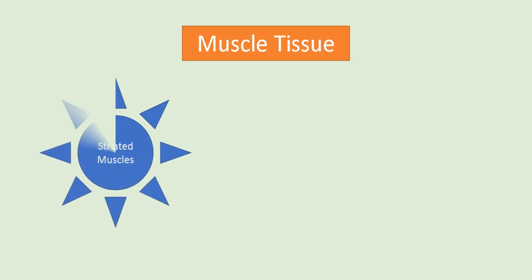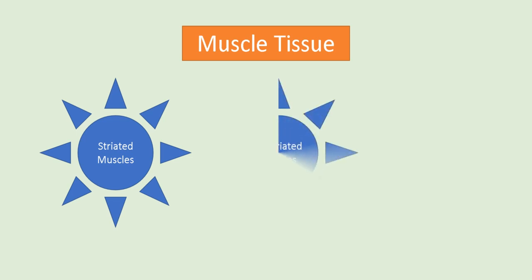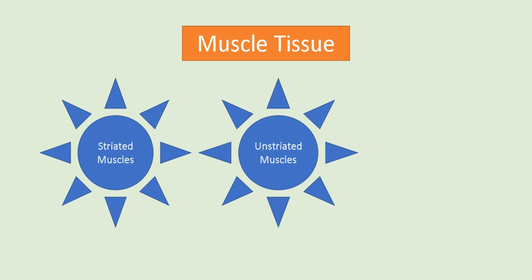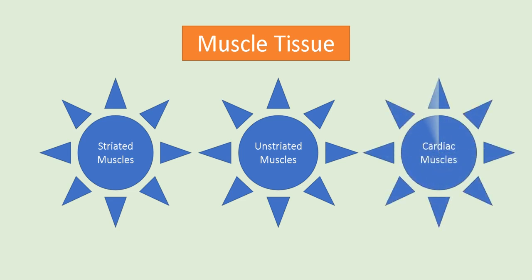Muscle tissue mainly forms the muscles and is of three types: striated muscular tissue, mainly found in the arms, legs, face, and neck; unstriated muscular tissue, mainly found in the skin lining of blood vessels, urinary bladder, and uterus; and cardiac muscle, which is specifically located in the heart.